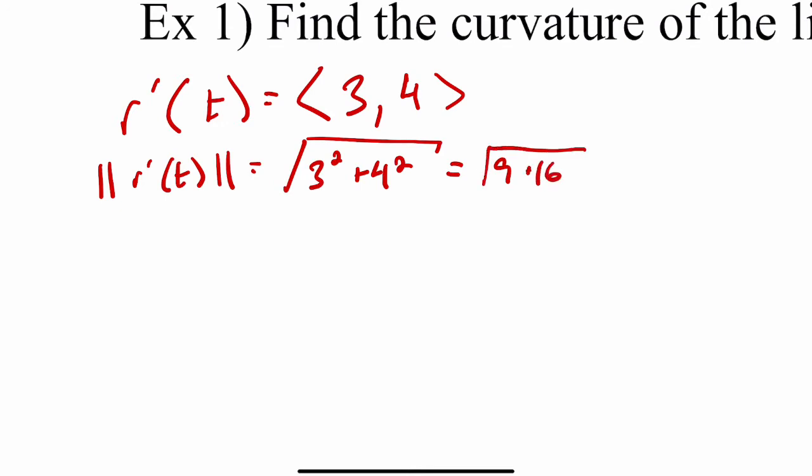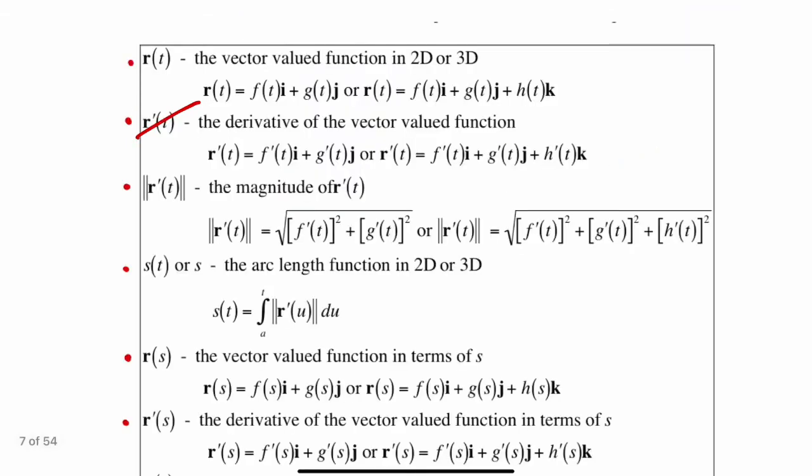9 plus 16 is 25. Root 25 is 5. So we have found the magnitude of r'(t). Next, we want to find s(t), which is the integral from A to t of the magnitude of r'(t).